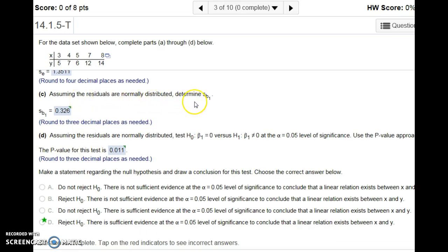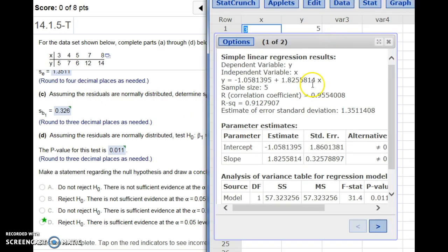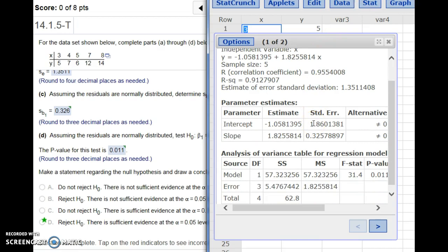Let me scroll down so we can see these. Assuming the residuals are normally distributed, determine SB1. That is listed right here. That's the standard error of our slope.